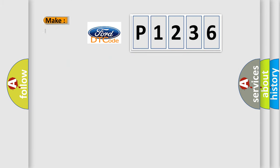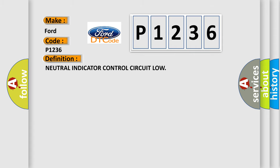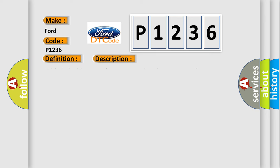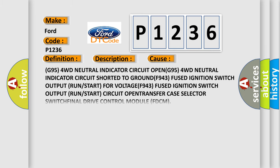What does the diagnostic trouble code P1236 interpret specifically for Infiniti car manufacturers? The basic definition is: Neutral Indicator Control Circuit Low. With the ignition on and no system under-voltage or over-voltage condition present, the Final Drive Control Module (FDCM) detects low voltage on the neutral indicator control circuit when the output is off. This diagnostic error occurs most often in the following cases.